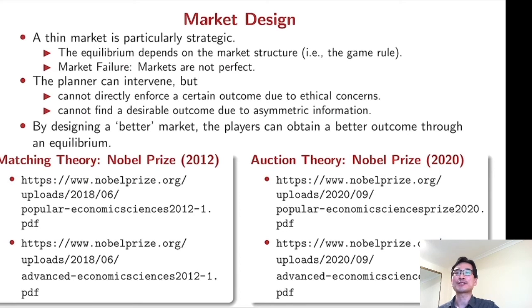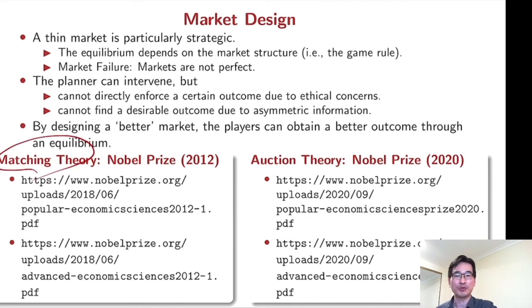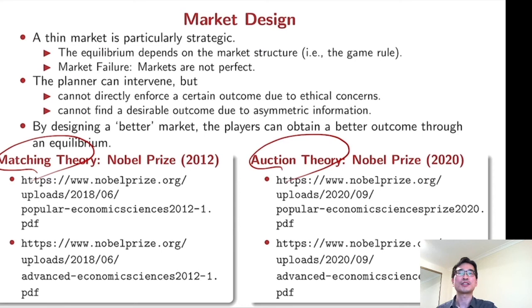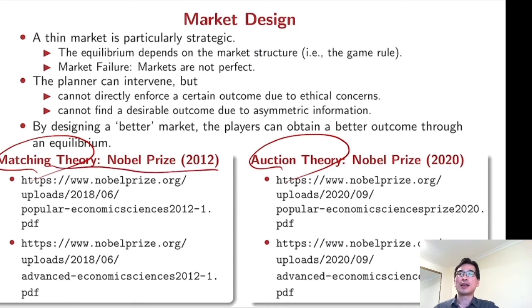There are two particular areas where market design has been successfully applied in practice. One is matching theory and the other is auction theory. These contributions have been recognized widely — Lloyd Shapley and Alvin Roth won the Nobel Prize in 2012 for matching theory, and Milgrom and Wilson won the Nobel Prize last year for auction theory.